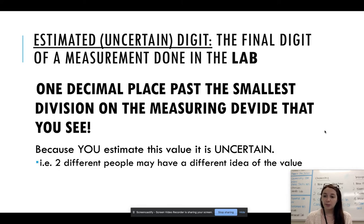So I talked about estimated, which is our uncertain digit for a second there. That is the final digit of a measurement that is done in lab. So it's one decimal place past the smallest division on the measuring device that you see. So because you estimate, the value is always uncertain because it's what you think that number is. And so what I think could be different than what you think, especially in this case.